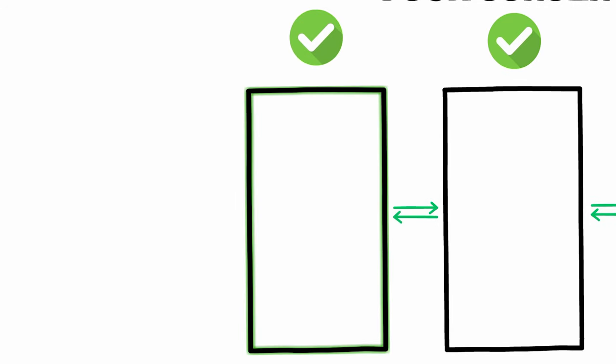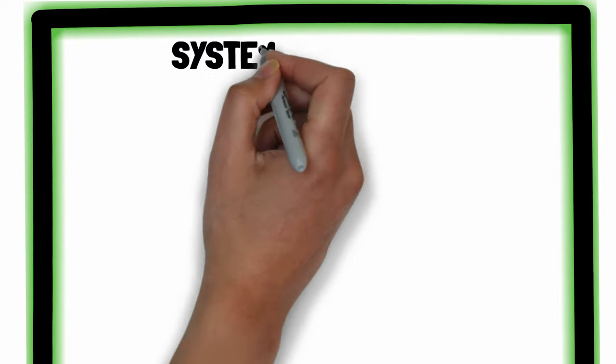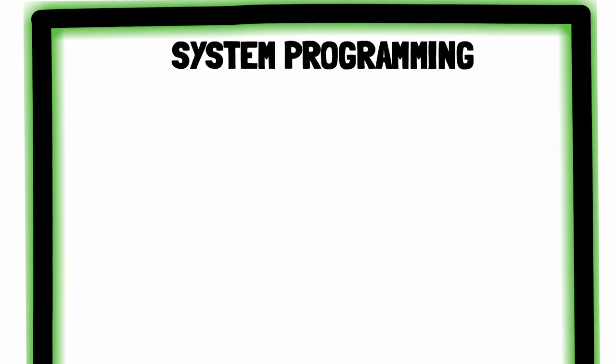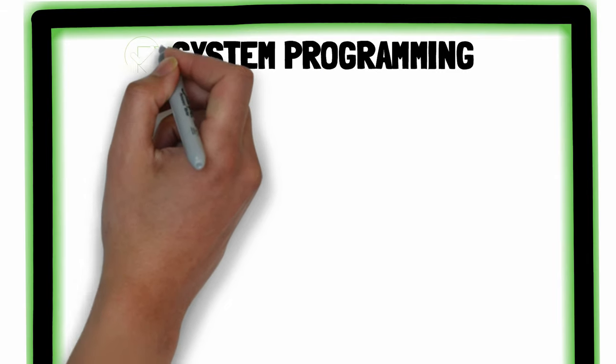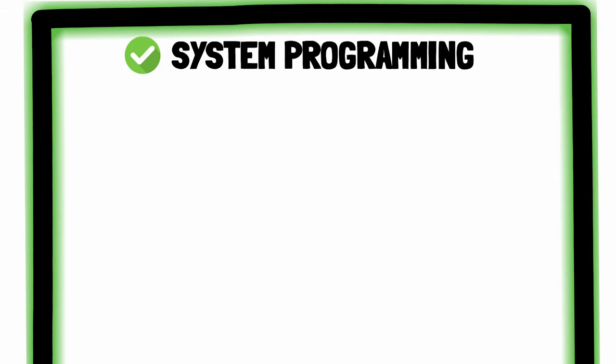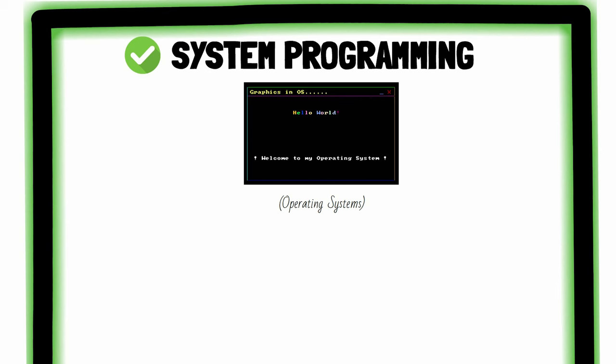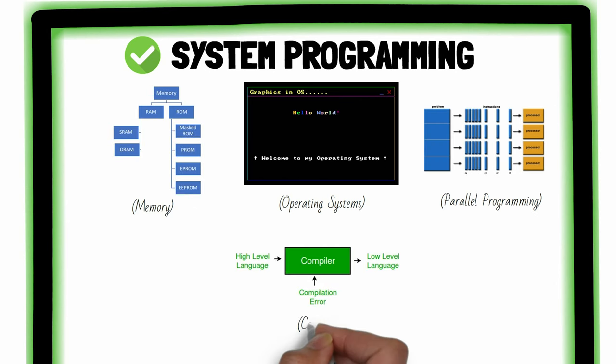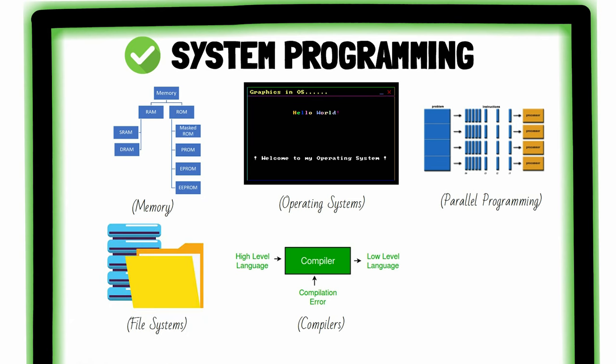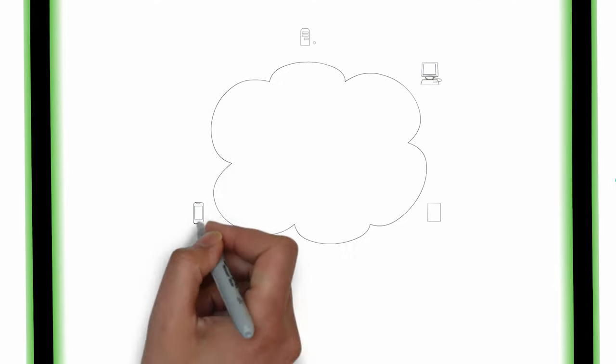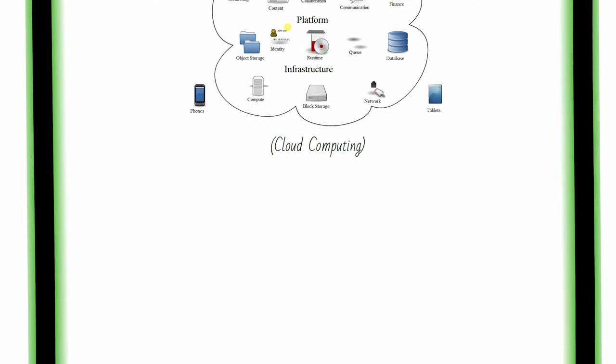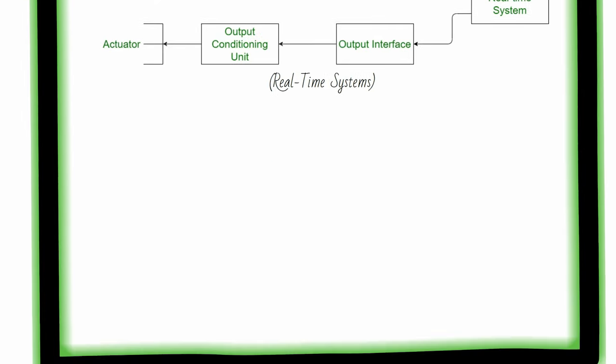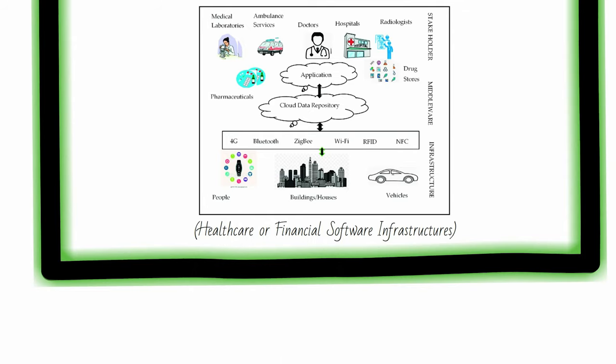The first concentration we have is the System Programming Path, which is the closest to a computer science degree. Here, you'll specialize in software for computer systems, meaning you'll learn how to efficiently create or use operating systems, memory, parallel programming, compilers, file systems, and more God-tier software skills. This path prepares you for building any type of large software system like cloud computing, real-time systems, or healthcare or financial software infrastructures.